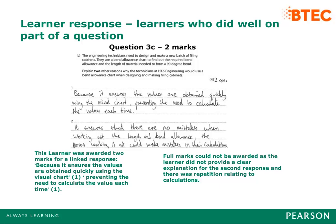Many learners gave incorrect simplistic responses such as 'easy to use' and 'saves the engineer time' with no justification. One learner was awarded two marks for a linked response: 'it ensures the values are obtained quickly using the visual chart' (one mark), 'preventing the need to calculate the value each time' (one mark). Full marks could not be awarded as the learner did not provide a clear explanation for the second response and there was repetition relating to calculations.